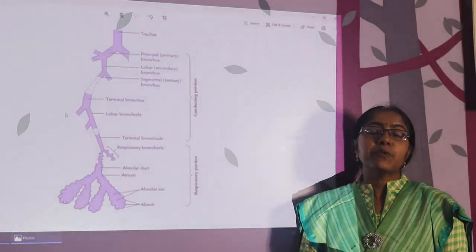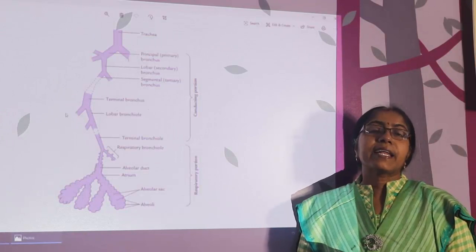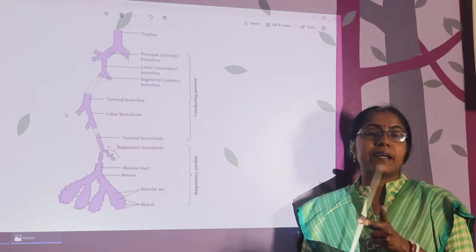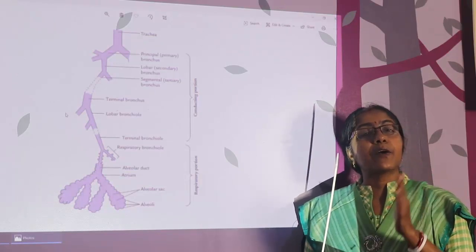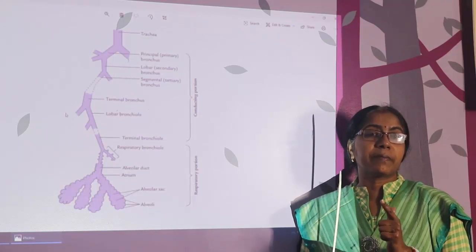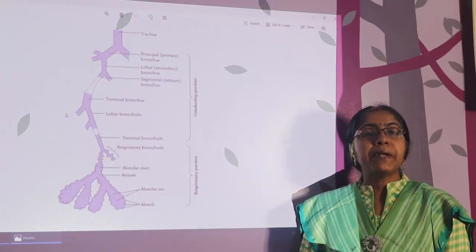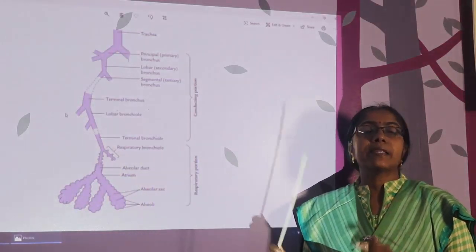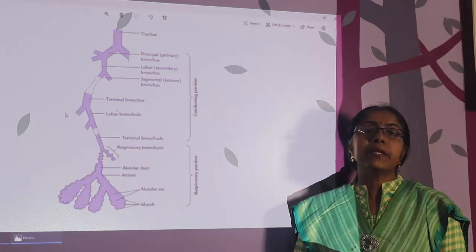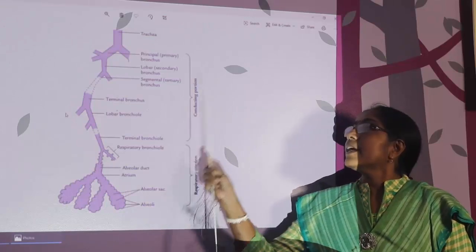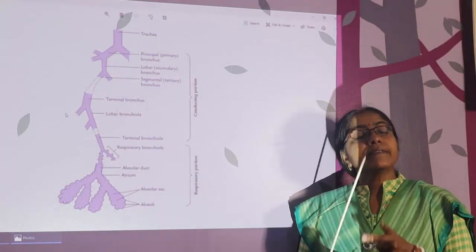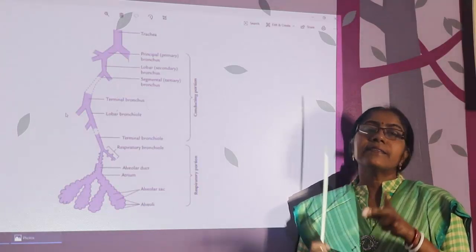Pulmonary arteries carry deoxygenated blood — this is the exception, as all other arteries carry oxygenated blood. The respiratory portion receives nutrition from the pulmonary artery and the atmospheric air present in the alveoli. The conducting portion receives oxygenated blood from the bronchial arteries. So the lung is supplied by two sets of arteries: bronchial arteries and pulmonary arteries.